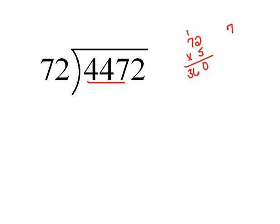What if we tried 72 times 7? Let's see, 7 times 2 would be 14, 7 times 7 would be 49, plus 1 is 50. Okay, now that's too large. So maybe we try 72 times 6. 6 times 2 would be 12, 6 times 7 would be 42, plus 1 is 43. So 432 is as close as we're going to be able to get.